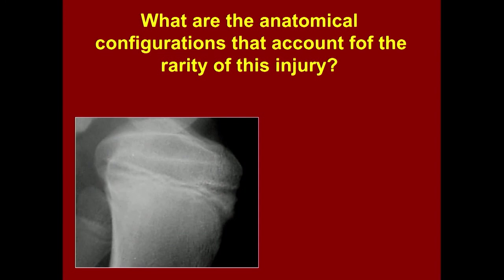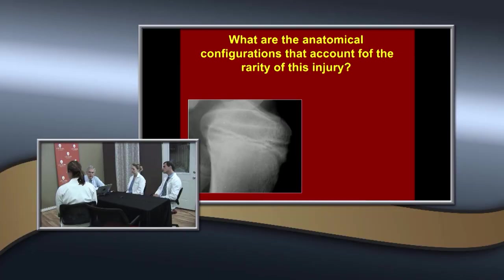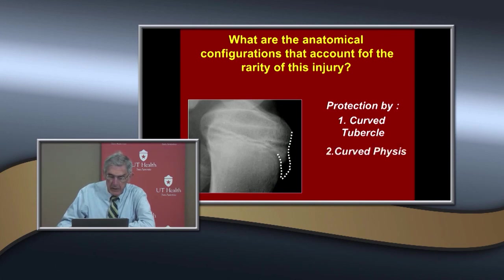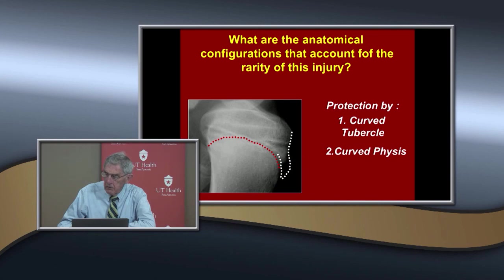Why are these injuries rare? What anatomically protects the proximal tibial physis? The ligaments, and also the bony structure — the physis is not straight, it's curved, and there's the tibial tubercle. The curved physis is not as vulnerable to tension or shear stresses.